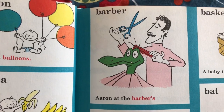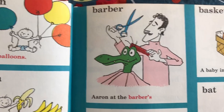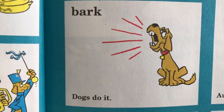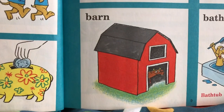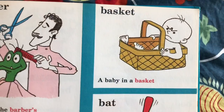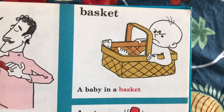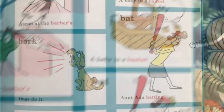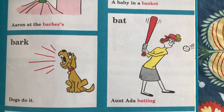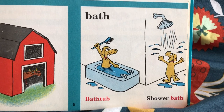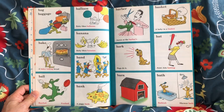Barber — Aaron at the barber's. Bark — dogs do it. Barn — nice red barn with a cow in it. Basket — a baby in a basket. He doesn't look very happy, does he? Bat — Aunt Ada batting. Bath. Bathtub. Shower bath. Okay, we continue on to the next page of the letter B.